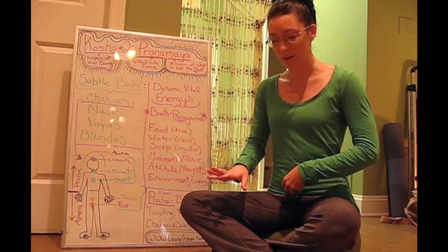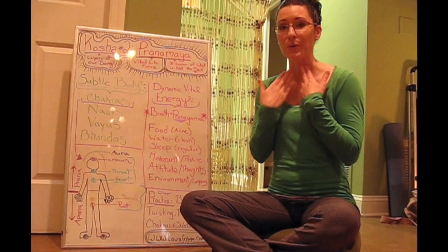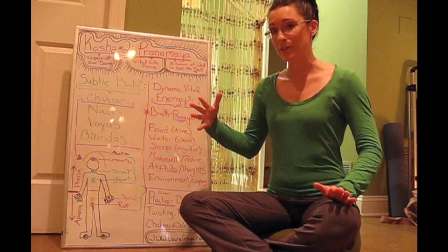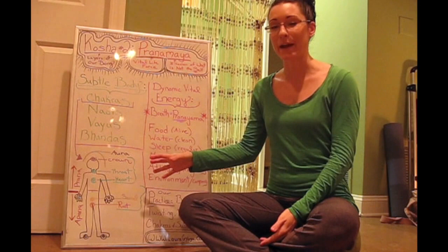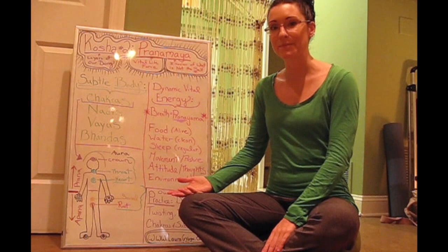And we have the root chakra all the way at the base of the pelvis, the sacral chakra, and then the solar plexus, the heart, the throat, the third eye, the crown of the head. And then in some schools of yoga, they think of the aura or the energy that's outside of your physical body as another aspect of your subtle body.